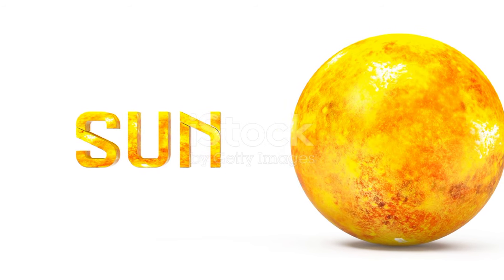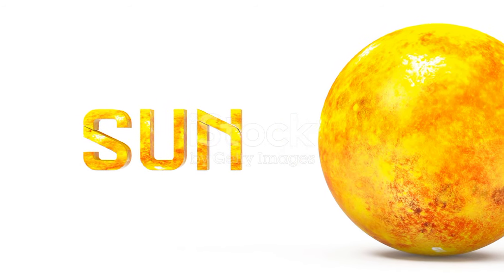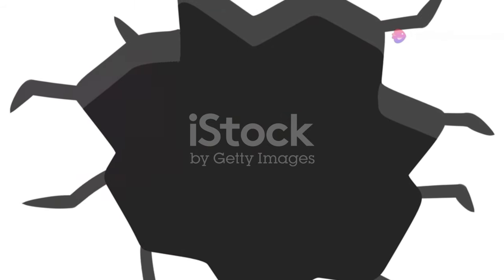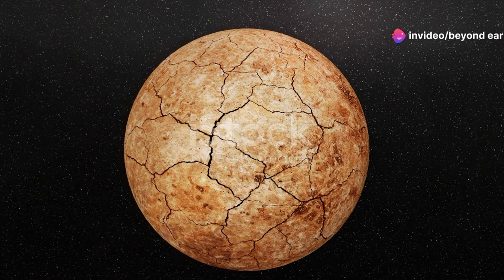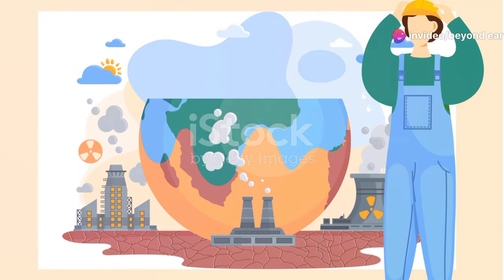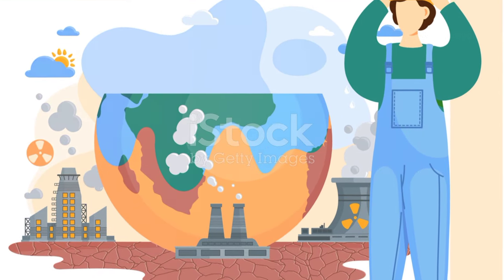No sunlight means no photosynthesis, which means plants can't make food. This would have a catastrophic impact on the entire ecosystem. And without plants, the entire food chain collapses. Herbivores would starve first, followed by the carnivores that depend on them.